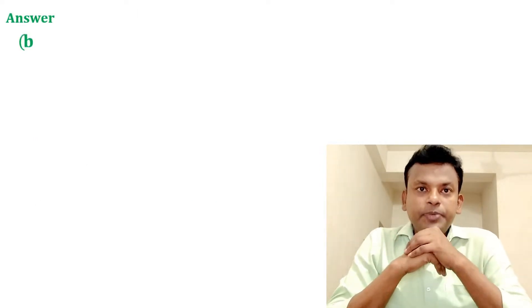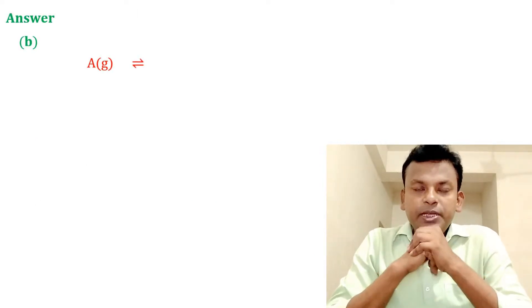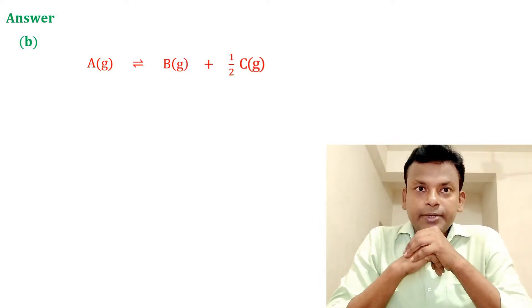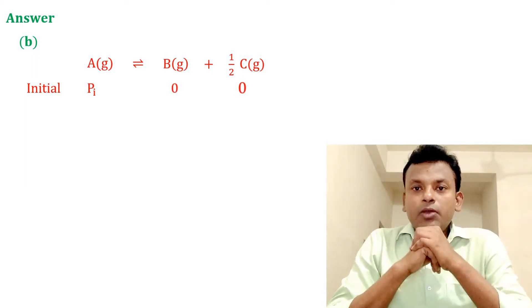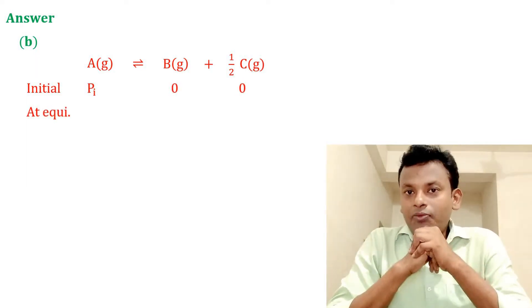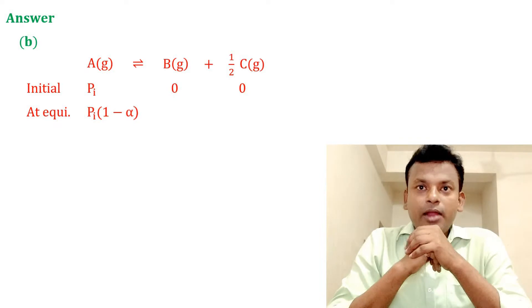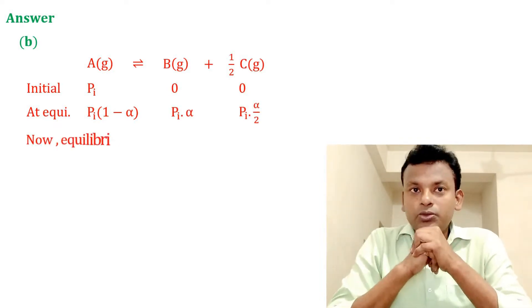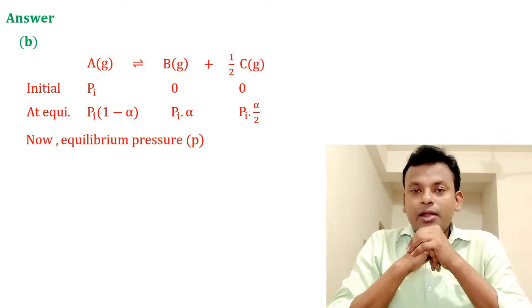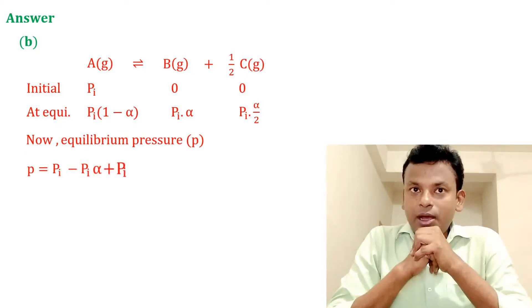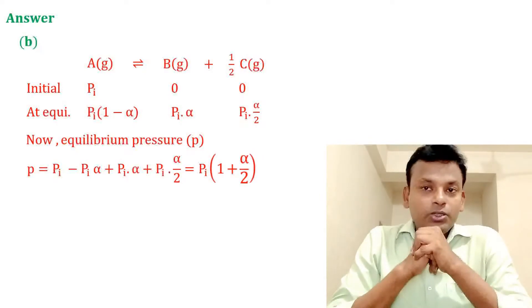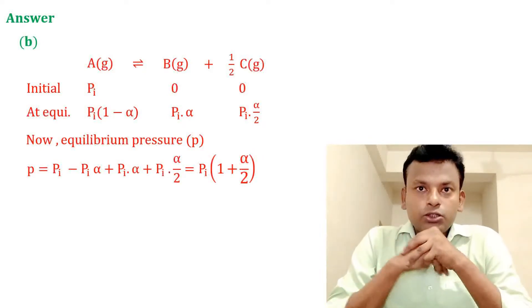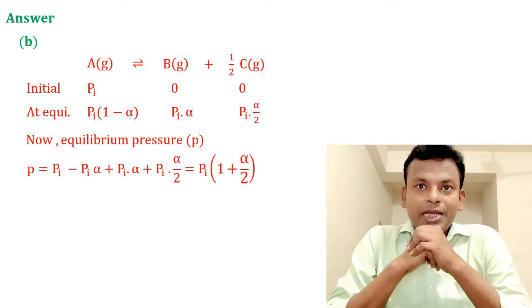Answer is option B. A gives B plus half C. Initially Pi; at equilibrium: Pi(1 − α), Pi·α, and Pi·α/2. Equilibrium pressure P equals Pi minus Pi·α plus Pi·α plus Pi·α/2, which equals Pi·(1 + α/2).